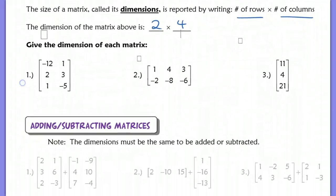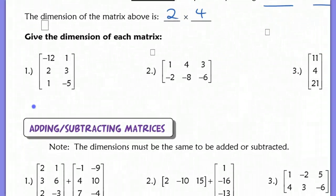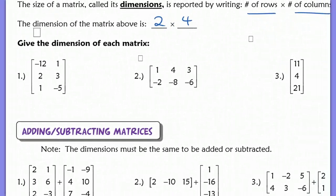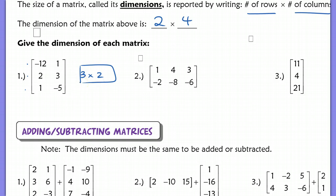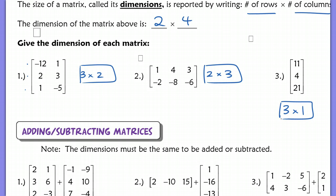Now let's quickly go through the dimensions of each of these matrices. This one has 3 rows and 2 columns, so this is a 3 by 2 — that's how you write out the dimensions. The matrix in number 2 is a 2 by 3. And the last one is a 3 by 1: it has 3 rows and only 1 column.